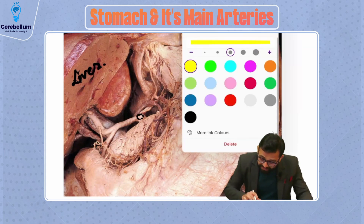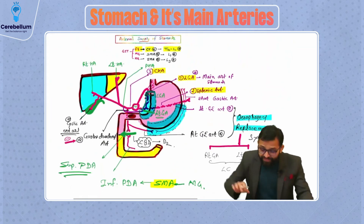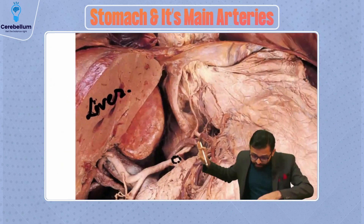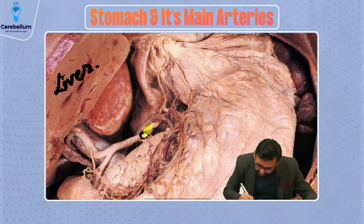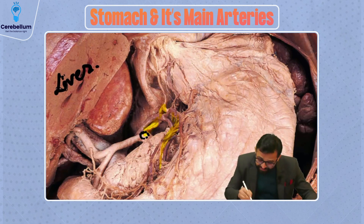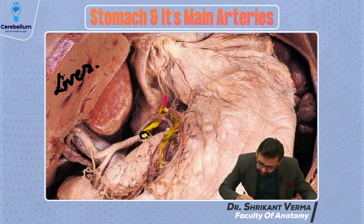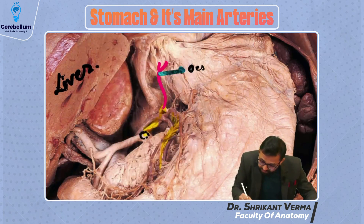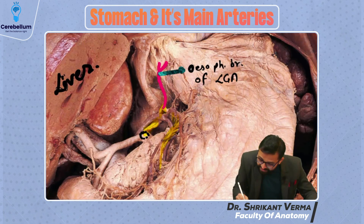Follow the diagrammatic presentation which we did with the surgery integration. Exactly similar, you can observe here this is our left gastric artery which is running along the lesser curvature. It is giving minute branches which are supplying the lower end of the esophagus — so you can see clearly the esophageal branches of the left gastric artery.